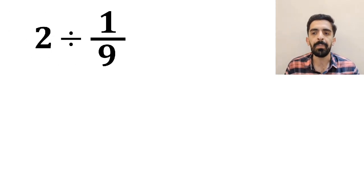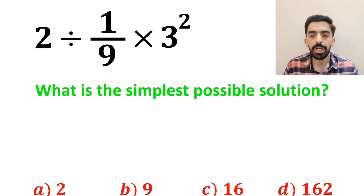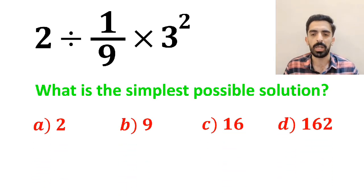If we have the expression 2 divided by 1 over 9 times 3 to the power of 2, then what is the simplest possible solution for this expression? Which option do you think is the correct answer to this question?